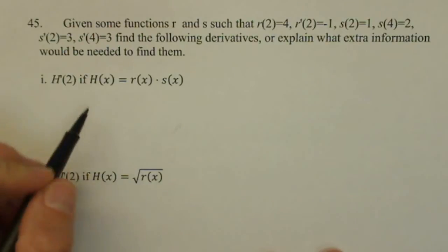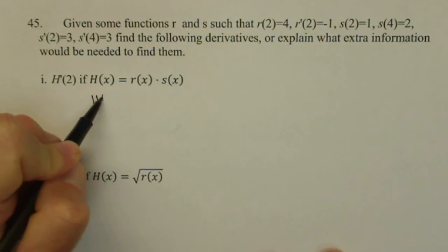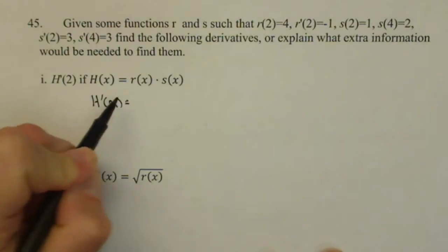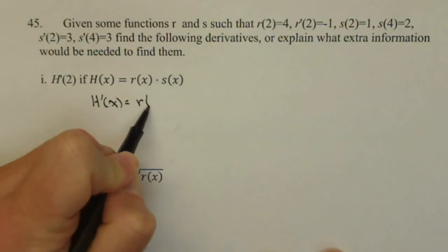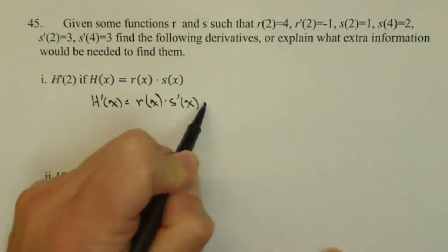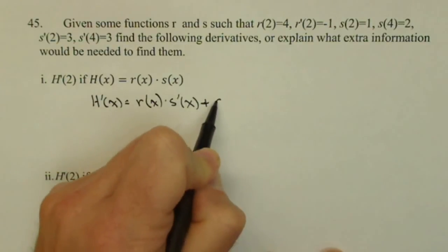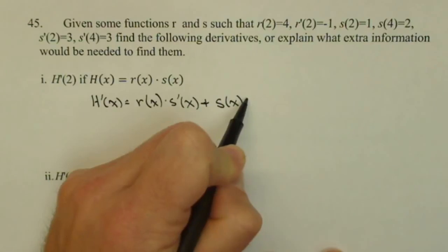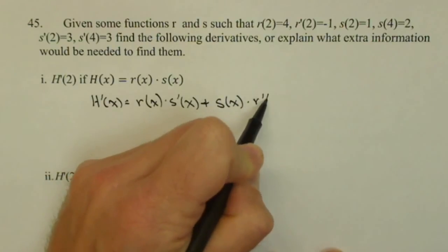Notice what we have is a product, then H prime of x would come from our product rule, so we hold one constant, so r of x times the derivative of the other, which is s prime of x, plus, now we hold the s of x constant times the derivative of r prime of x.